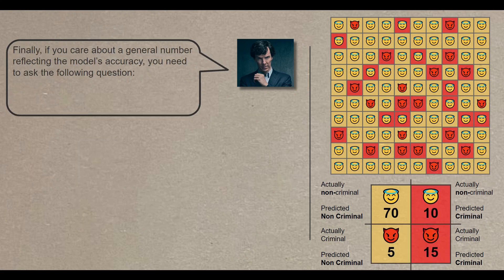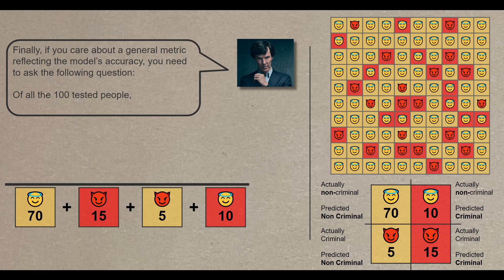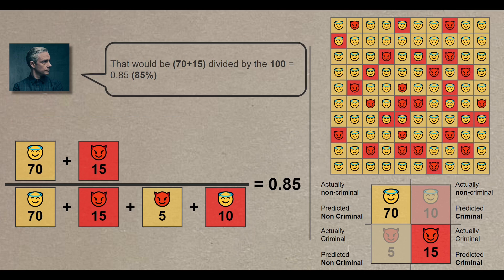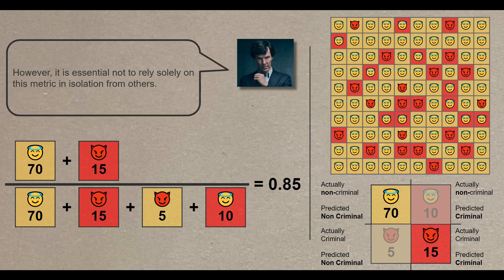Finally, if you care about a general metric reflecting the model's accuracy, you need to ask the following question. Of all the 100 tested people, how many were predicted correctly? That would be 70 plus 15 divided by 100, and that will give me 85%. Just remember, it's essential not to rely solely on this metric in isolation from others.